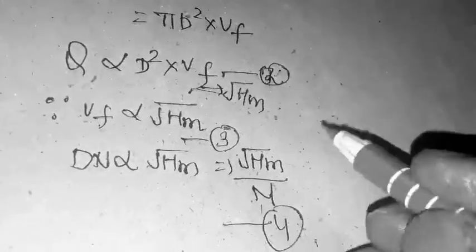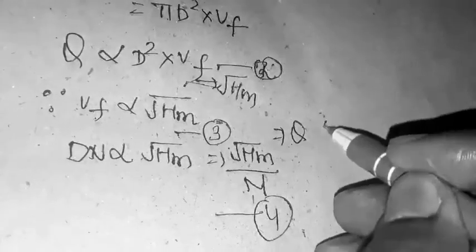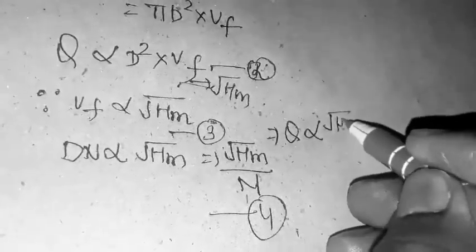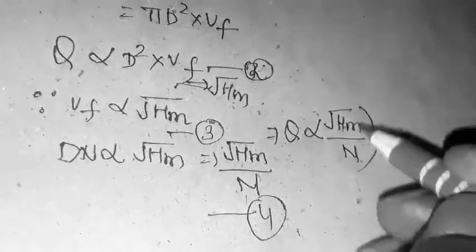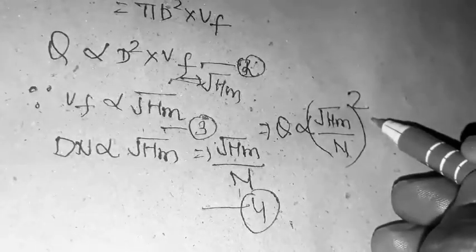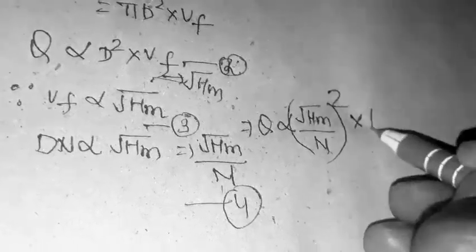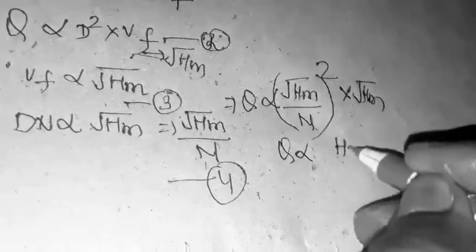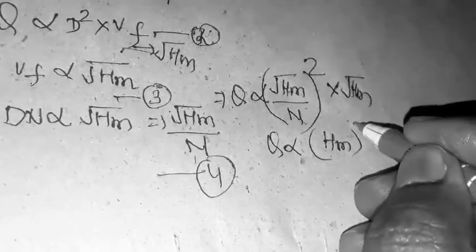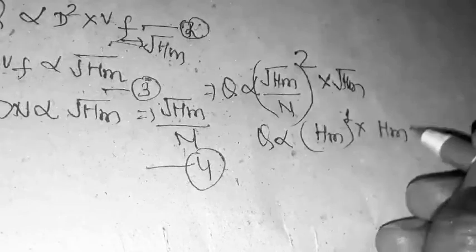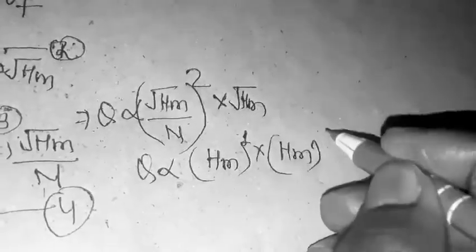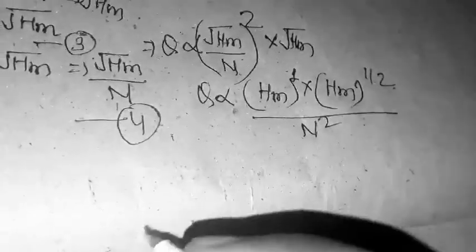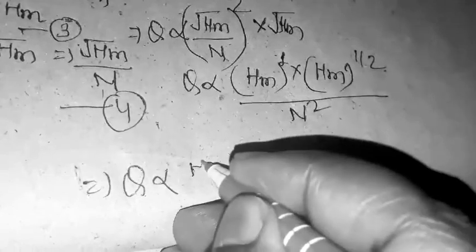From equations 1 and 2, U is directly proportional to under root HM upon N to whole square into under root HM. That gives us HM to power 1 by 2 upon N square. So Q is directly proportional to HM to power 3 by 2 upon N square.